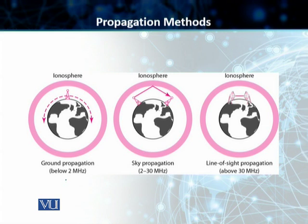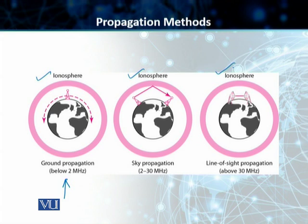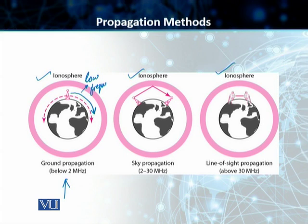In ground propagation, you have the ionosphere on top as a layer of the environment. The radio waves travel through the lowest portion of the atmosphere, essentially hugging the earth. The signals transmitted using ground propagation are of low frequency; they propagate in all directions from the transmitting antenna and follow the curvature of the planet. These low frequency signals follow the curvature of the earth — this type is called ground propagation.